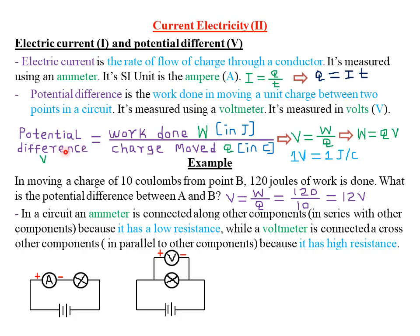Mathematically, potential difference V equals the work done W divided by the charge moved Q: V = W/Q. For this to be expressed in volts, the work done must be strictly in joules and the charge moved must be in coulombs — each quantity in its respective SI units. Therefore, in terms of symbols, V = W/Q.